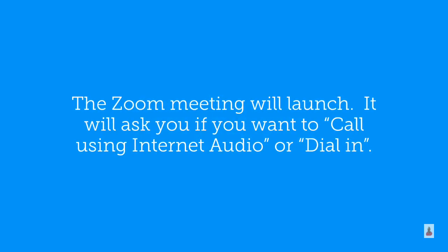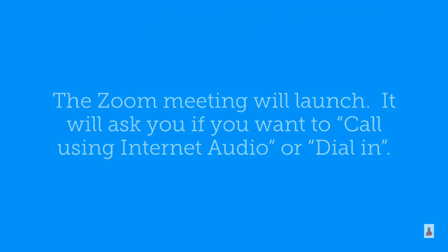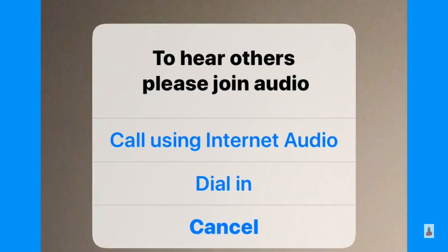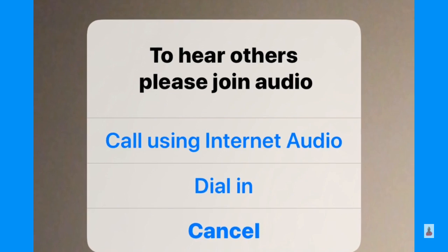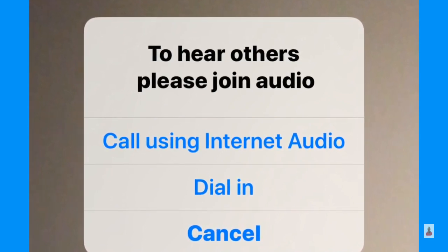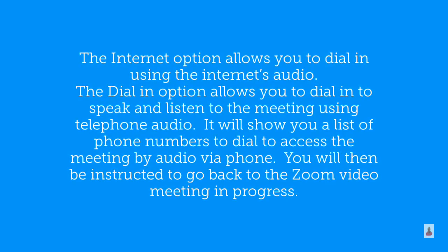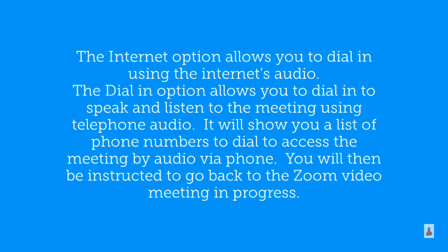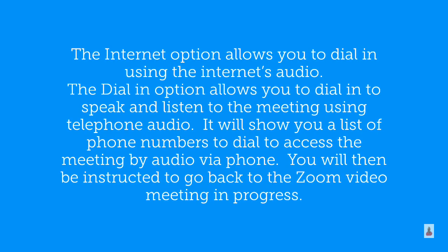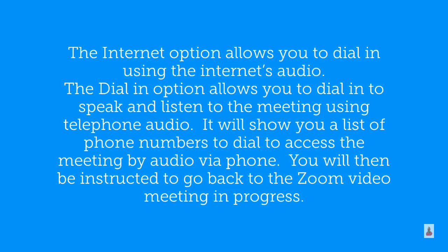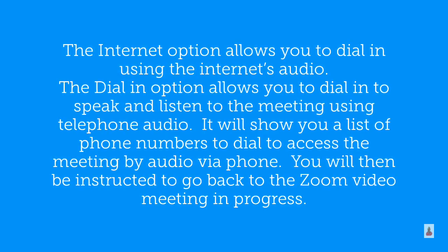The Zoom meeting will then launch and it will ask you if you want to call using internet audio or dial in. A pop-up box appears when the meeting starts and says to hear others, please join audio. It says call using internet audio or dial in. The internet option uses the internet's audio. The dial in option allows you to speak and listen using telephone audio, and it will show you a list of phone numbers to dial. You'll then be instructed to go back to the Zoom meeting in progress.